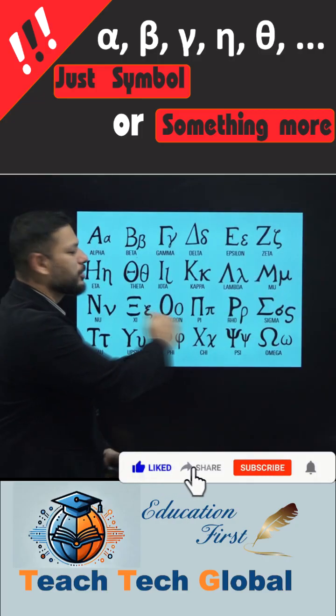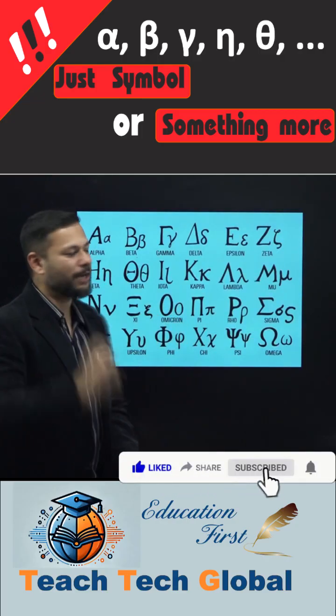Similarly, all these symbols belong to Greek language, which has 24 letters. Let me read it for you.